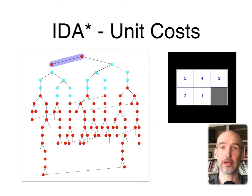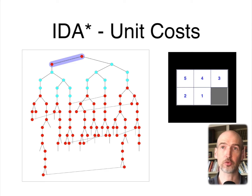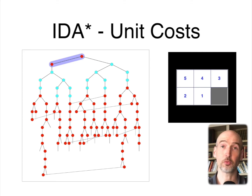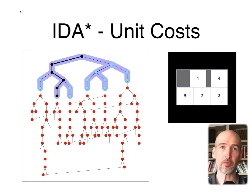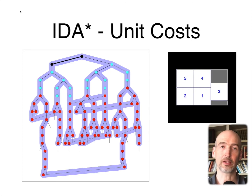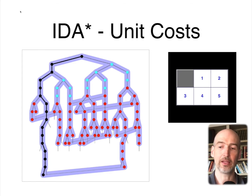This is an IDA* search tree, and in this problem we're going to show the equivalency between the search tree and the actual sliding tile puzzle on the right hand side. The nodes highlighted in blue are the nodes that will be searched as part of the current iteration. The color of the nodes in the tree tells us what the F cost is. In this particular instance, we have three possible F costs in the tree. It's going to search in a depth first manner through the current tree and continue this process until it finds the goal on this branch. That's how IDA* works.